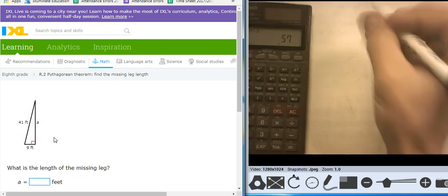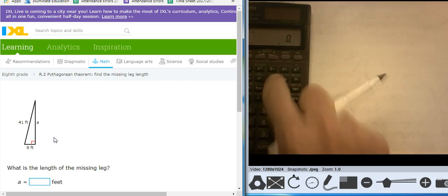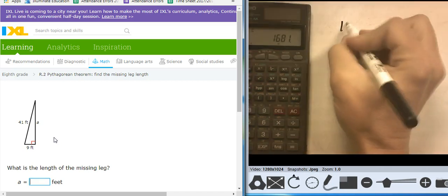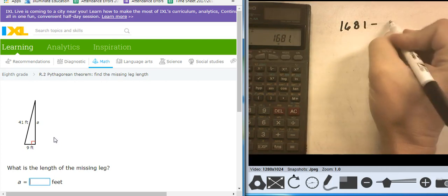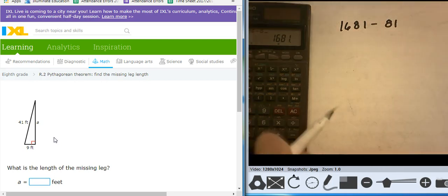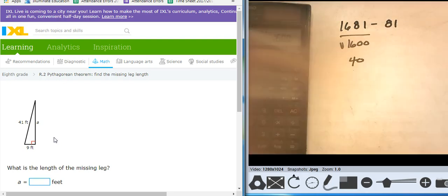41 squared minus 9 squared. So 41 squared, 1,681, minus 9 squared, which is 81, 1,600. Take the square root of that, it's going to take me to a 40.